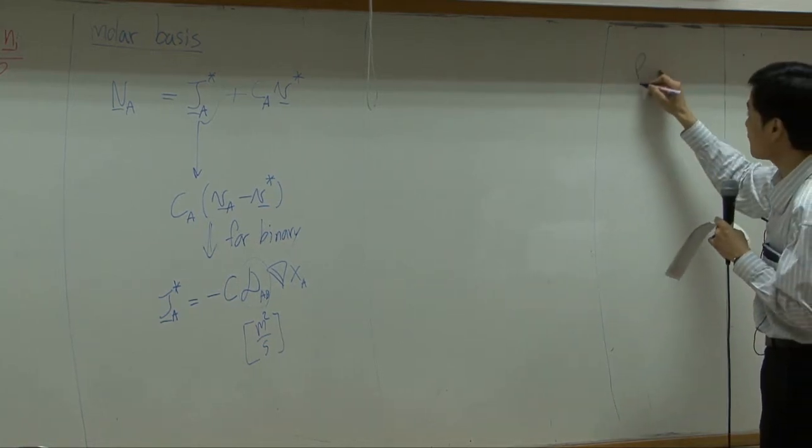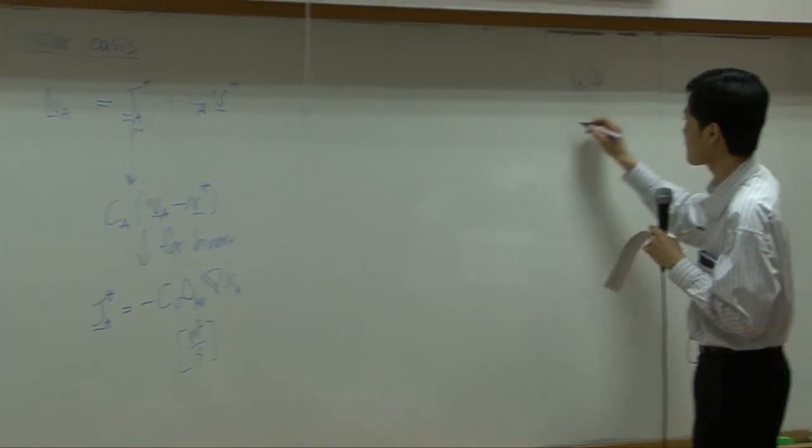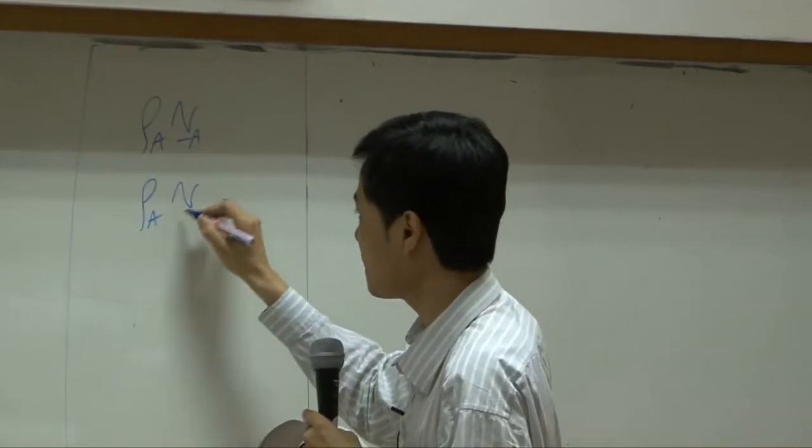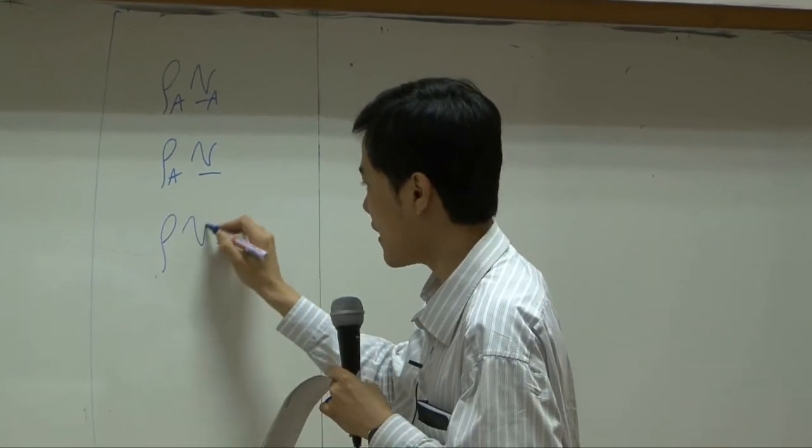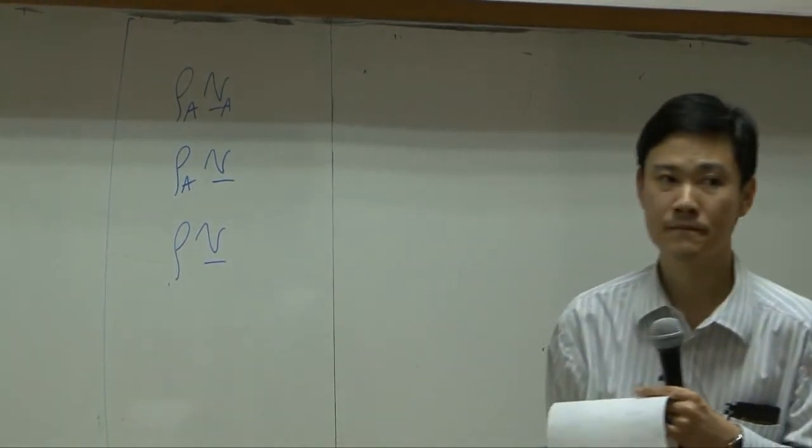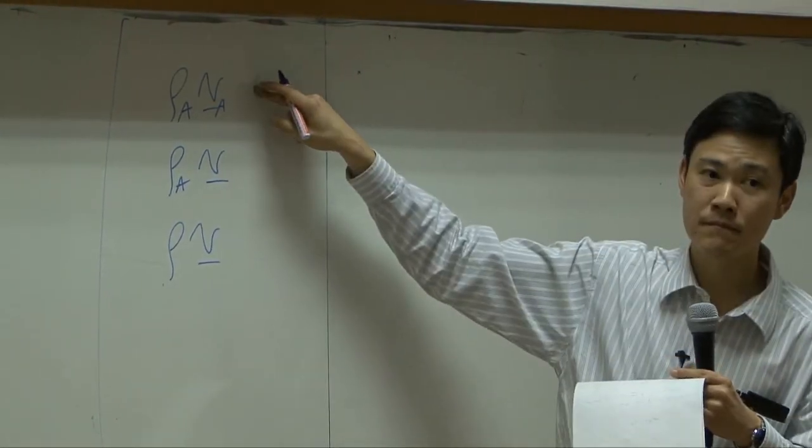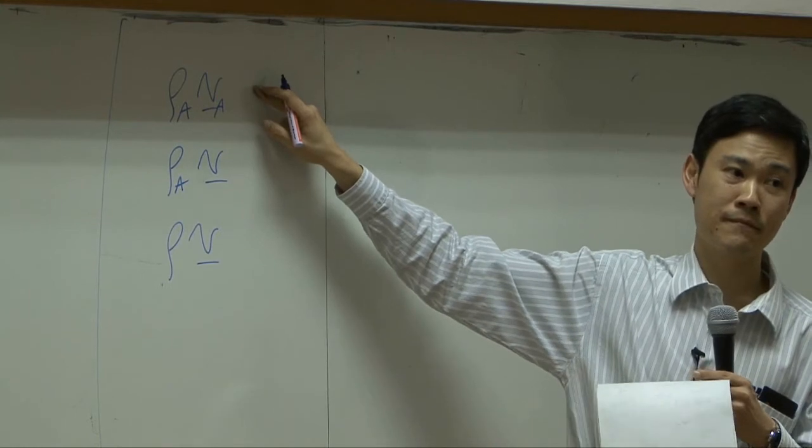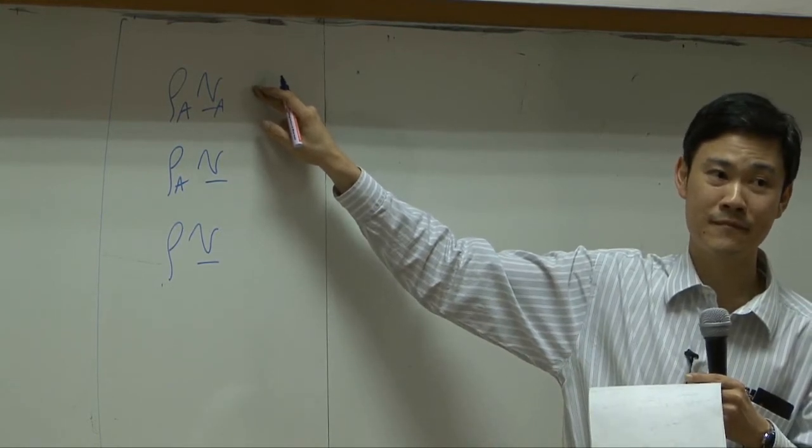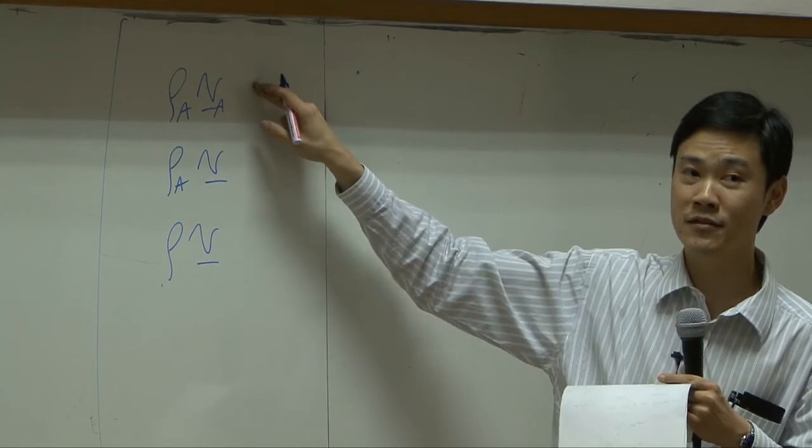Earlier, you have rho_A*V_A, you have rho_A*V, and then you have rho*V. What is this one? What is this one?